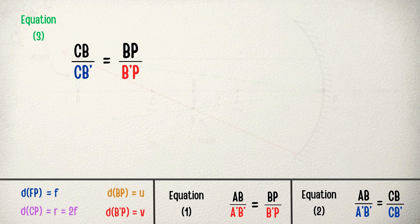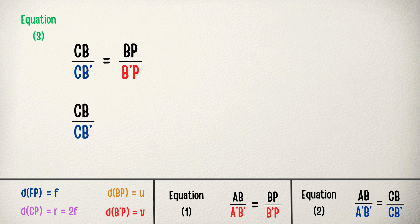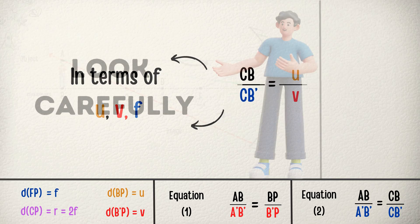We already know the value of BP as u, and similarly the value of B'P as v. So let's put them in the equation. Our equation becomes CB divided by CB' equals u divided by v. Now we will try to write these two terms in the form of u, f, and v. So please pay attention.